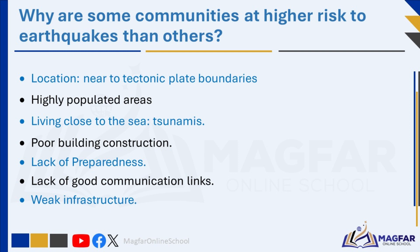Let's summarize the reasons why some communities are impacted more by earthquakes than others. Location: communities near tectonic plate boundaries or fault lines are at higher risk. For instance, the Pacific Ring of Fire, which encircles the Pacific Ocean, is prone to frequent seismic activity. Highly populated areas: areas with a high population are more vulnerable to earthquake hazards, meaning urban areas with large numbers of people are more at risk than rural areas with low populations.